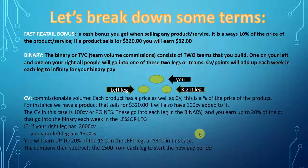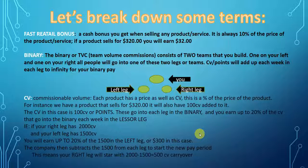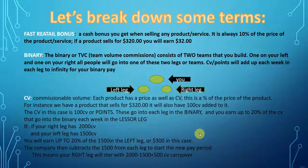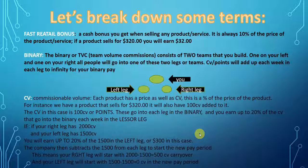The company then subtracts that 1,500 from each leg to start the new pay period. This means your right leg will start at 2,000 minus 1,500, which is 500 — that is what we call your carry over. Your left leg will start with 1,500 minus 1,500 equals 0. So you will always have one leg every week that starts at zero.